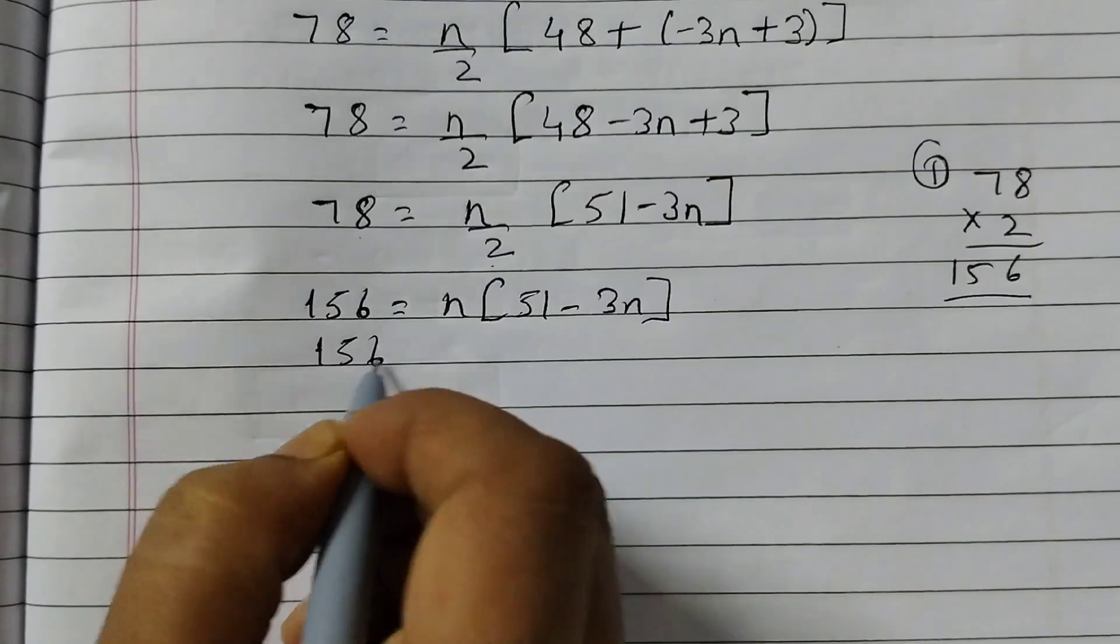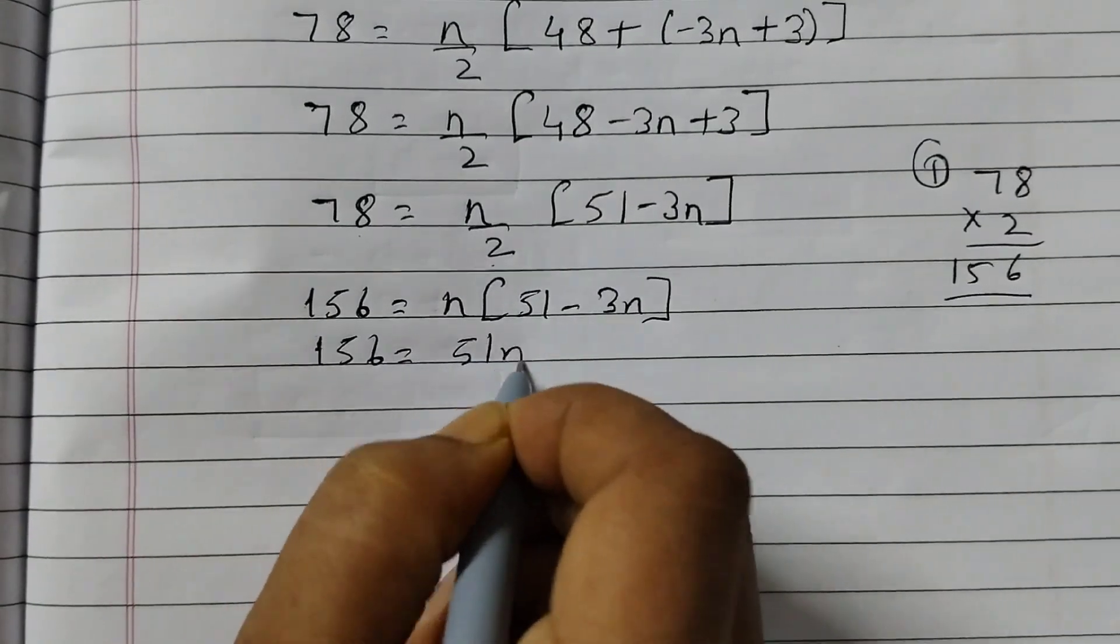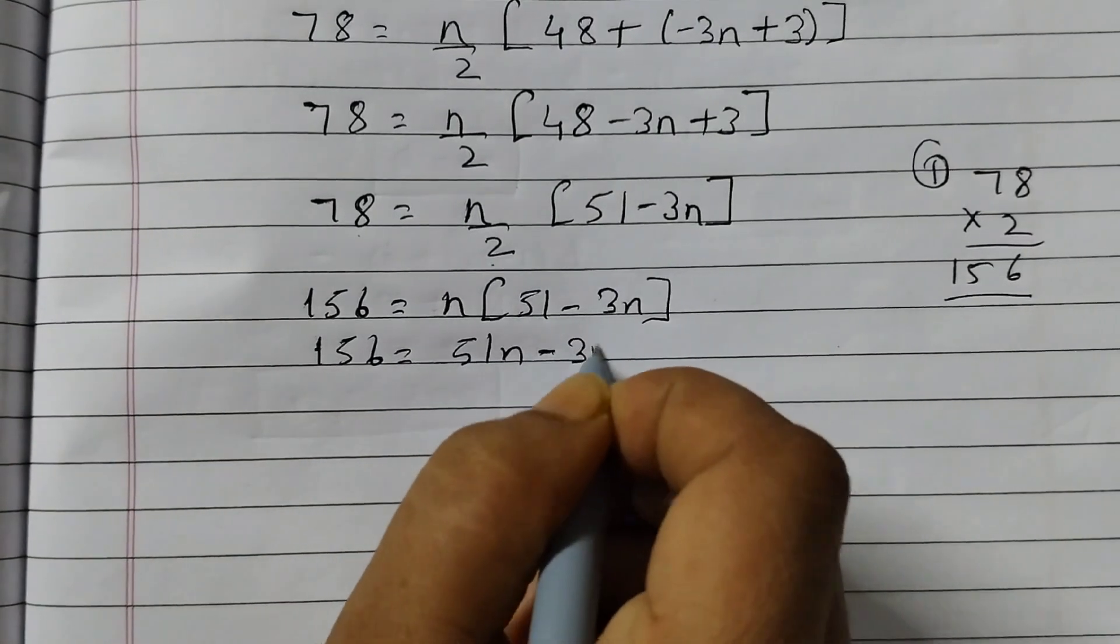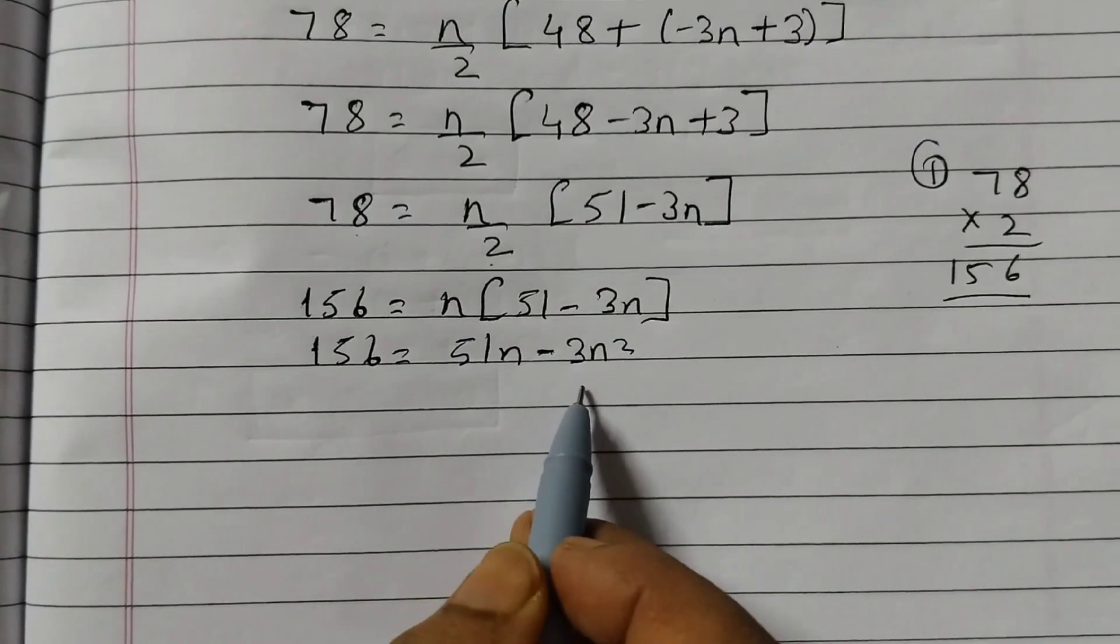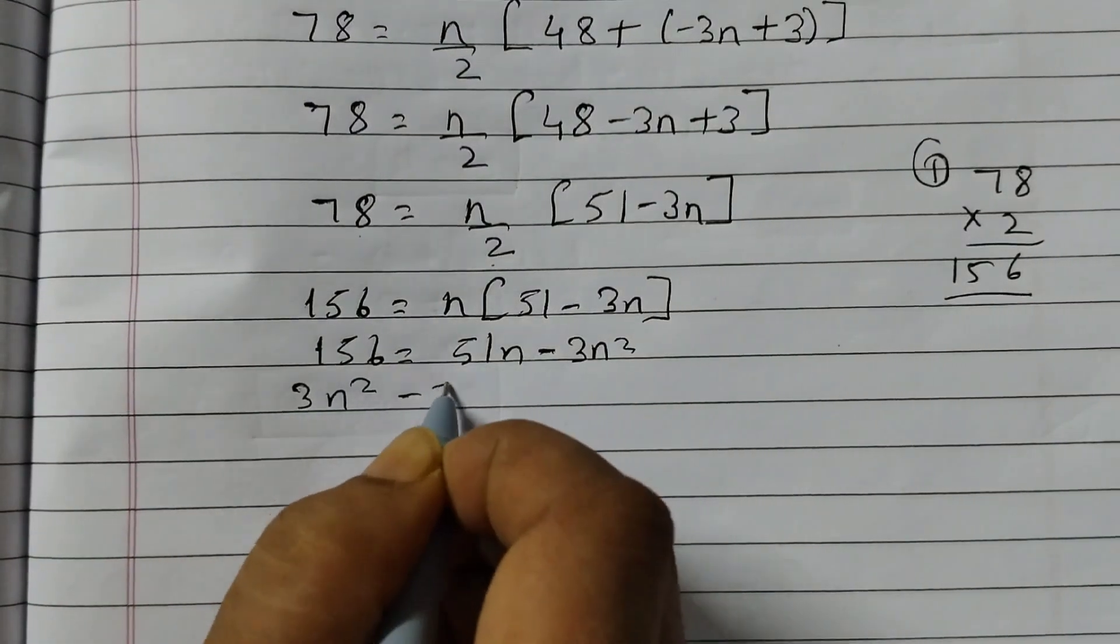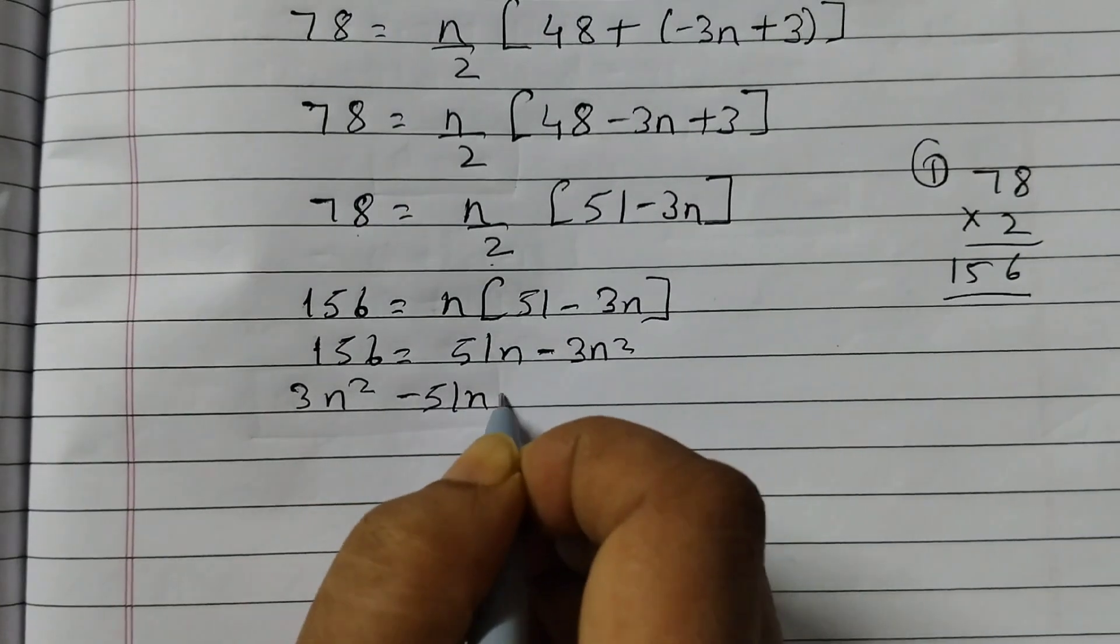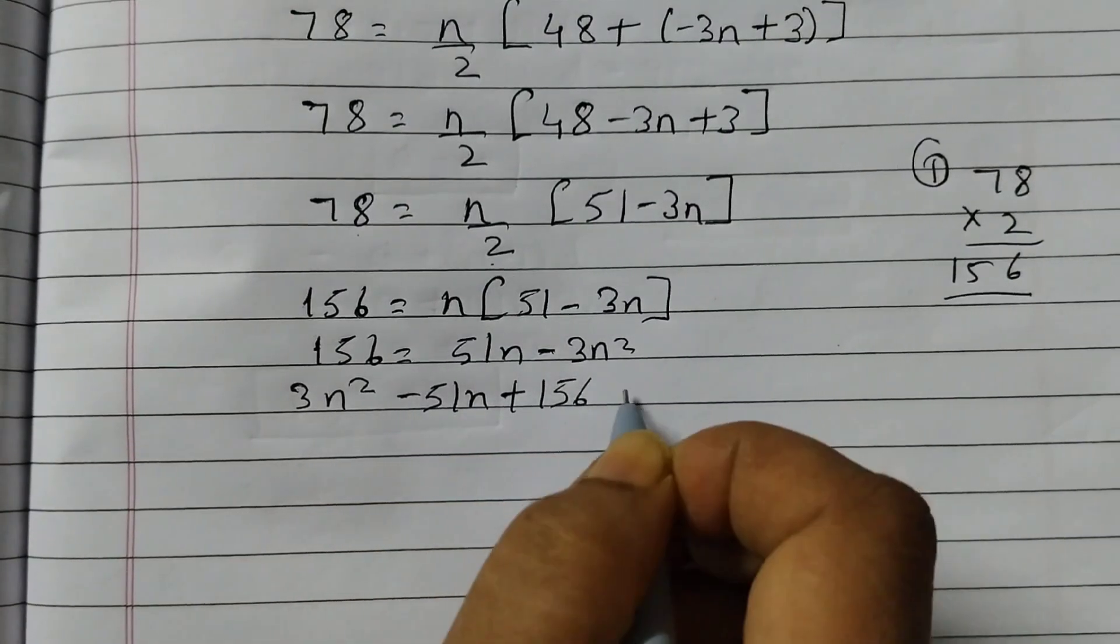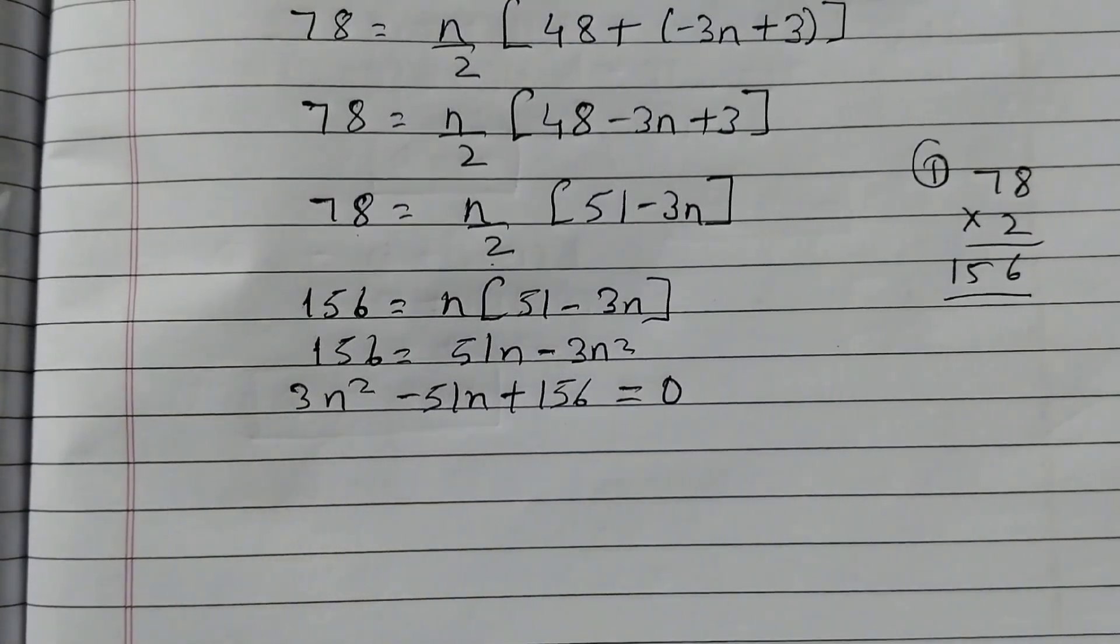Open up the bracket, 51n minus 3n squared. Now take these two terms to the other side. So this will be 3n squared minus 51n plus 156 is equal to 0.